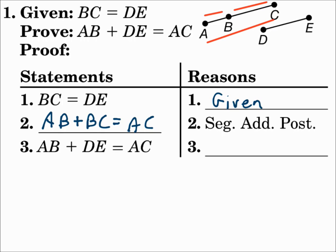Notice what I have now. I'm very close to what I'm trying to prove. I have AB plus something equals AC, and the prove statement says AB plus something equals AC. But I have a BC and they have a DE. But look, we're given that BC equals DE, so I can substitute BC with DE. And now I have what I'm trying to prove. Since I substituted equal values there, that's substitution.